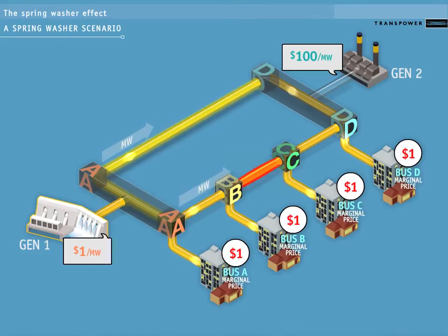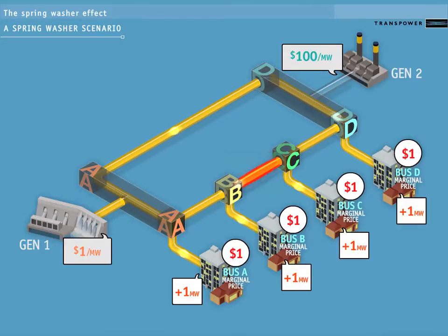A, D is limited in its transmission capability. This binding constraint will affect SPD's calculations when it determines where the next megawatt can be supplied from, and therefore will affect the marginal prices.